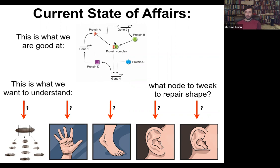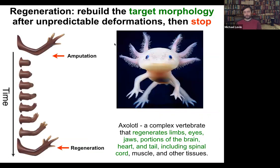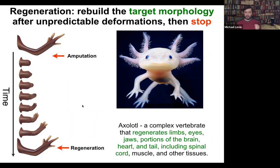Some animals are very good at this, and their bodies show remarkable plasticity in the collective activity of cells. This animal is a salamander — it regenerates its limbs, its eyes, its jaws, portions of the brain and the heart. If they're amputated, they will grow back. What's cool is that not only is this process incredibly flexible — if you amputate at the shoulder, you grow the whole thing; if you amputate at the wrist, you just grow the parts you need — but then it stops. How does it know when to stop? Because when it stops is when it has built a correct salamander arm.